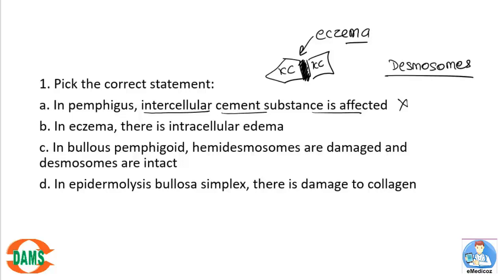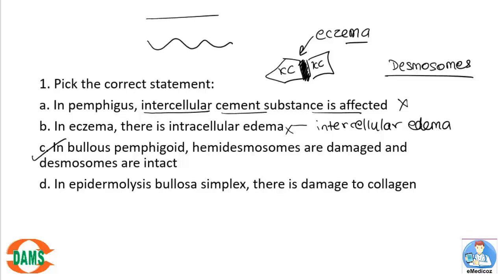Desmosomes are affected — this is the main pathology in pemphigus. In eczema, the second option says intracellular edema, but it should be intercellular edema, so that's wrong too. In bullous pemphigoid, the hemidesmosome is damaged and desmosomes are intact — this appears to be correct. At the dermo-epidermal junction, the basal keratinocyte has hemidesmosomes which are completely destroyed in bullous pemphigoid.